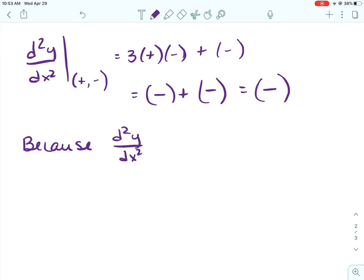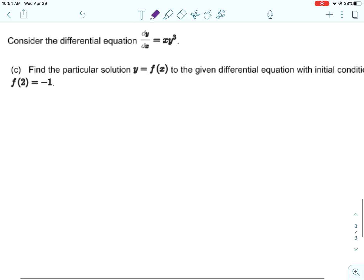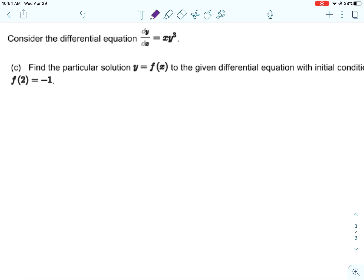And then same thing here. A negative to an odd power is going to be a negative. So this is going to be a negative plus a negative, which is definitely a negative. And that means that in quadrant 4, the second derivative is always going to be negative. So d2y/dx2 is less than 0 in quadrant 4.